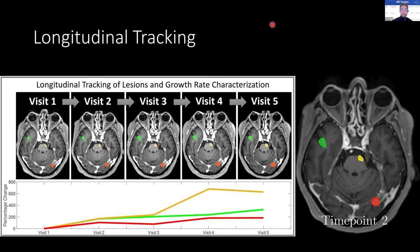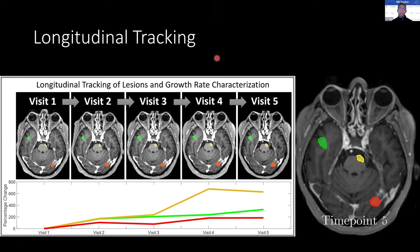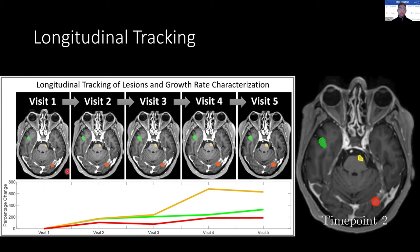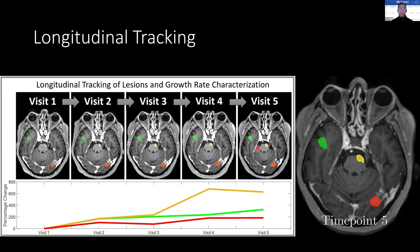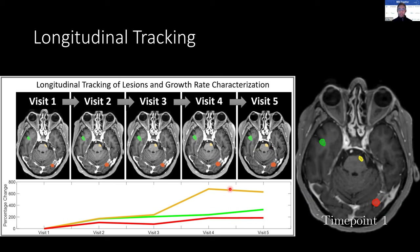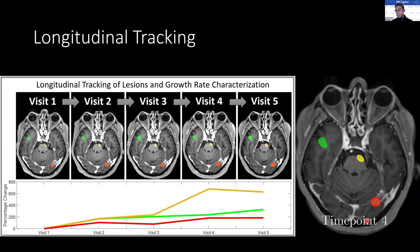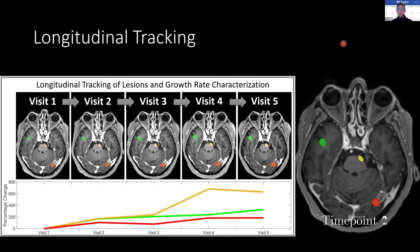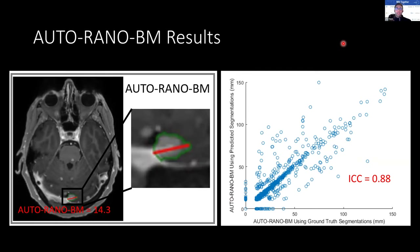Using the automatically segmented data from our neural network, we can now longitudinally track these lesions across time. Here we plot the volumetric percent change from baseline for three different lesions denoted in green, yellow, and red. While the yellow lesion has the smallest absolute change in volume, it does have the largest percent change, which may be of interest to the treating clinician. We show the same visualization over time, and you can clearly see the red lesion growing as the patient progresses. To assess the quality of these measurements, we used ICC and note high agreement — 0.88 this time.